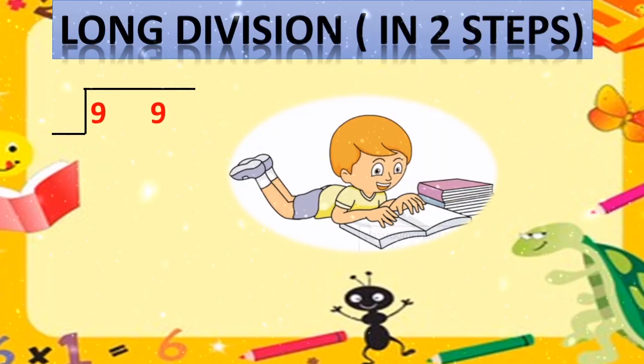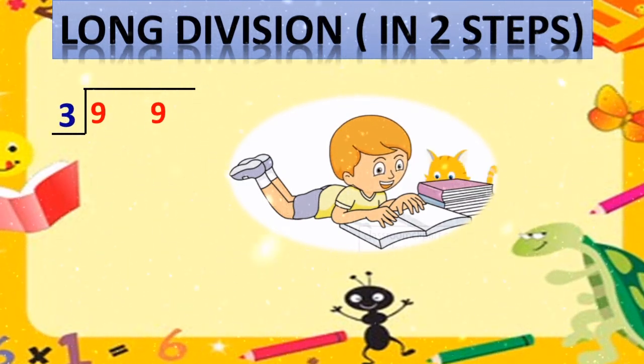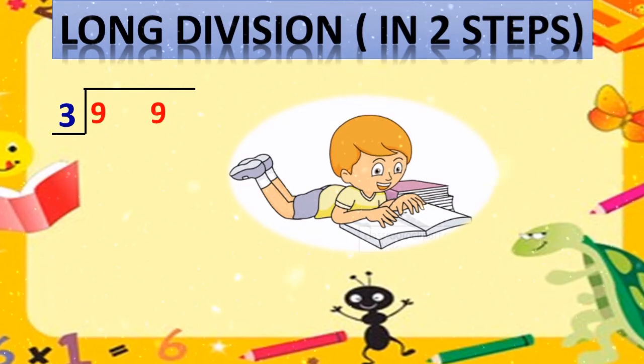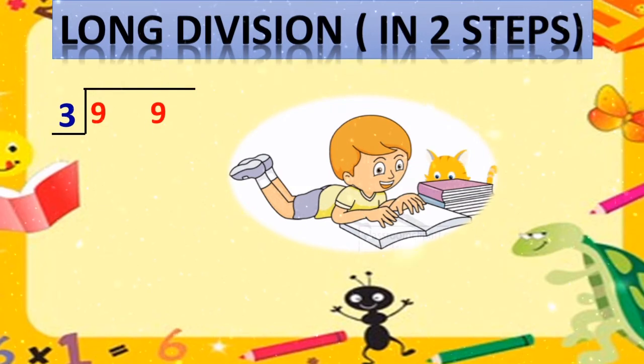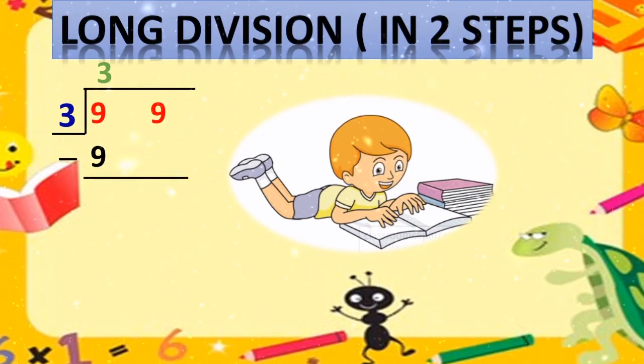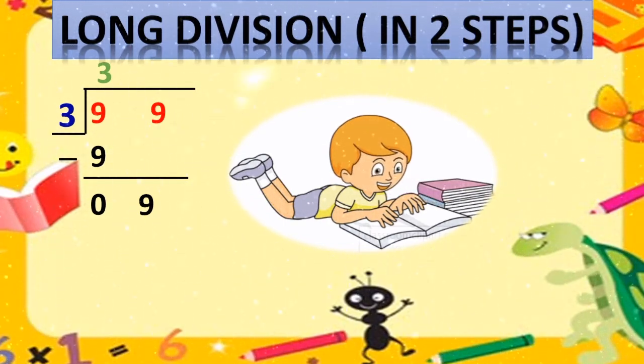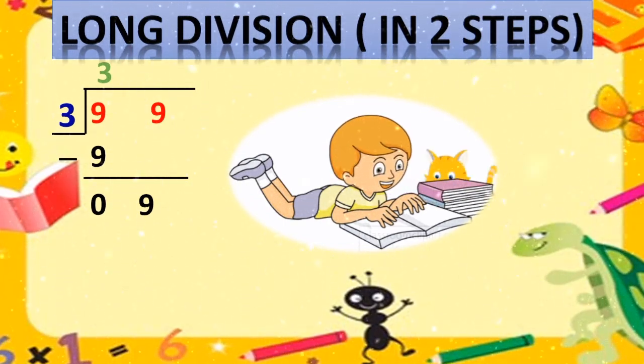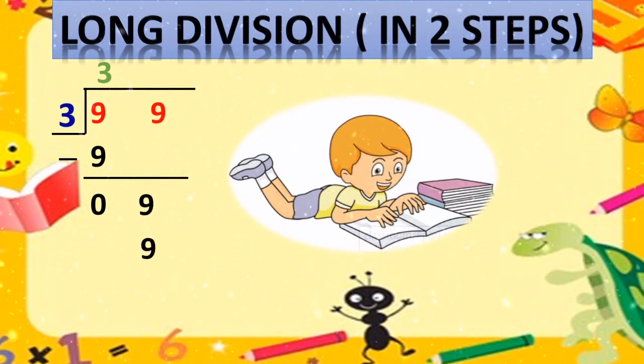Yes beta, it is the next question. 99 is divided by 3. So simple. Aap ne 3 ka times table padhna hai. 3 ones is 3, 3 twos are 6, 3 threes are 9. 9. Subtract each other. 9 minus 9, 0. Very good. Second 9 come down. Yes. Again, aap 3 ka times table padhna hai. Aap jante hain ki 3 ka times table mein 9 kab aata hai? Very good.